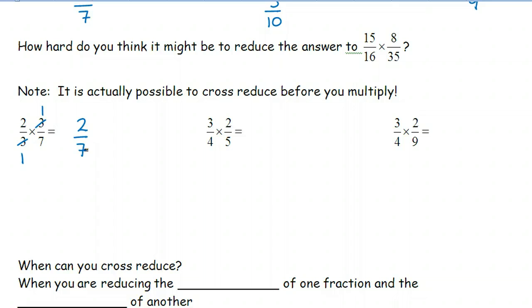Similarly, with three over four times two over five, the three and the five do not cross-reduce, but two and four both divide by two. So I'll divide them both by two. And if I multiply the numerators together, three times one makes three, and two times five makes ten.